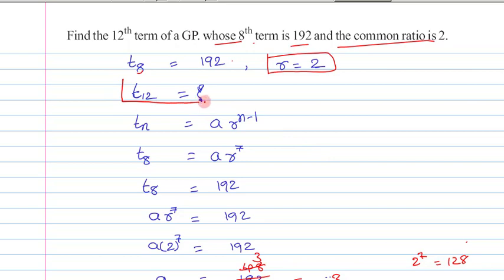Then we need to find out T12, that is the 12th term. In order to find T12 in the GP, we should know an important formula: the nth term of a GP, Tn, is equal to a times r to the power of n minus 1.